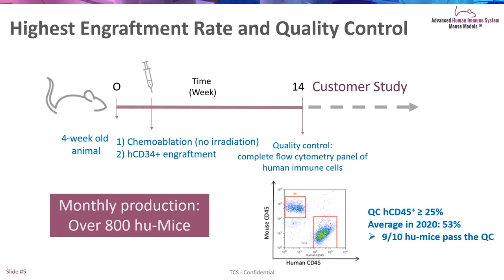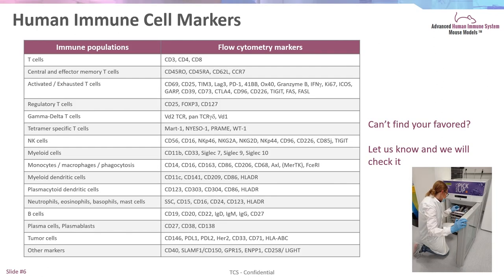The second advantage is that we produce those mice in advance, so you don't have to wait 14 weeks to start your experiment. About 200 animals are humanized every week just to cope with demand, so you can really start your experiment right after signature. Those animals have been QC'd by flow cytometry and the main immune cell populations have been characterized.